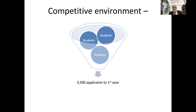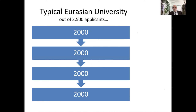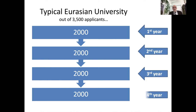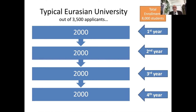The United States is a competitive environment. For example, if a school has 3,500 applicants for a four-year business program, in a typical Eurasian university — including Japan, Nepal, or Myanmar — out of 3,500 applicants, 2,000 are accepted into first year. That same 2,000 goes through first, second, third, and fourth year to graduate, giving a total enrollment of 8,000 students with 2,000 in each year.